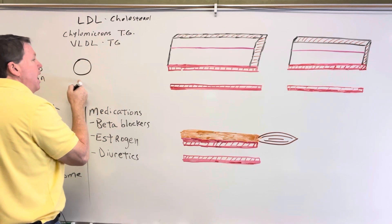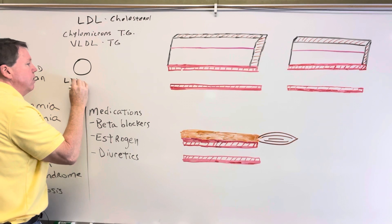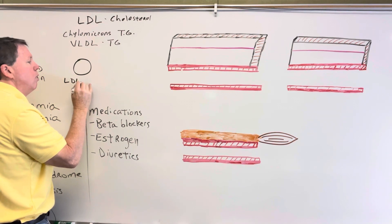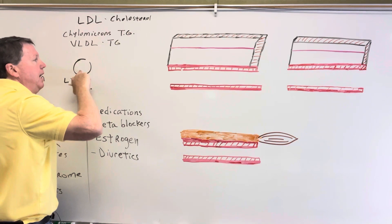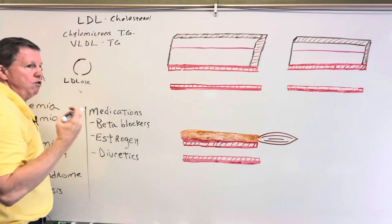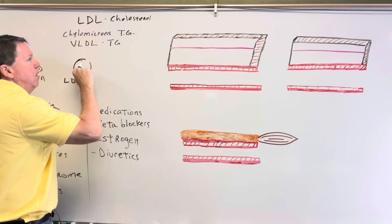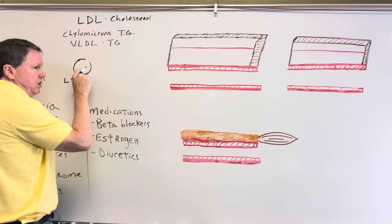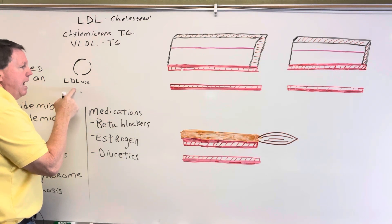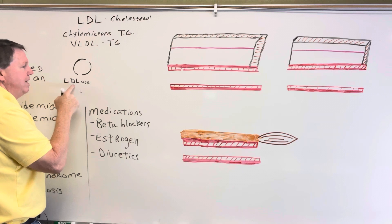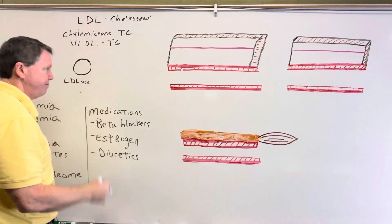Now let's look at why these can build up due to genetics. These lipoproteins carry either cholesterol or triglycerides. You have something called lipoprotein lipase, which will cleave the lipoprotein, allowing the triglycerides or cholesterol to come out and be used by cells — usually adipose or muscle — for hormones, energy, etc. If we don't have lipoprotein lipase, the lipoprotein never gets cleaved, never gets used, and it starts to build up in the bloodstream.